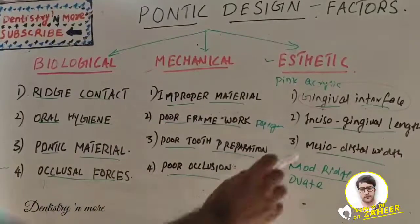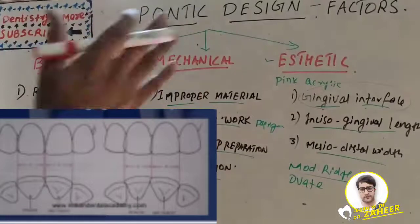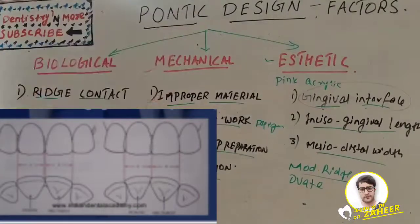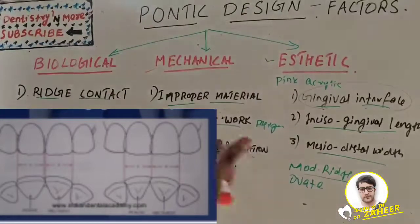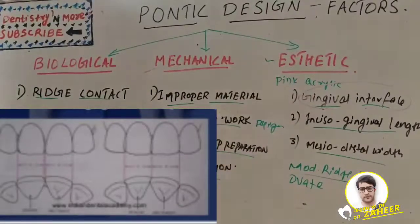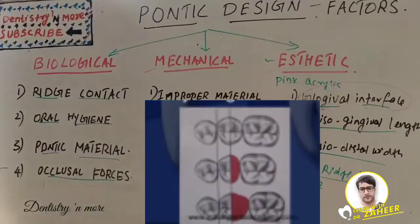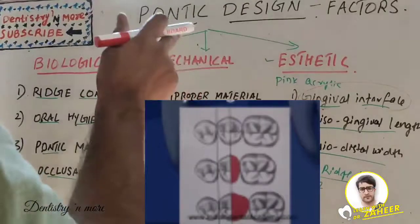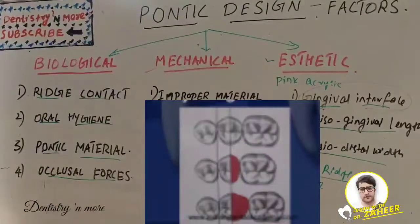Regarding mesiodistal width, the space available for the pontic is frequently less than the contralateral tooth because adjacent teeth migrate into the edentulous space when the patient comes to the clinic after one or two years. This discrepancy can be corrected by orthodontic repositioning, or by altering the shape of the proximal area — duplicating the mesial half of the tooth and adjusting the size of the distal half.